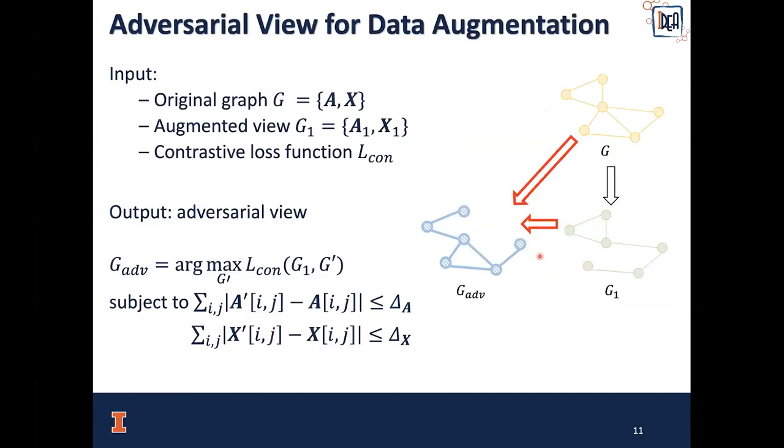I will first talk about how to generate an adversarial view for automatic data augmentation. Our input is the original graph G, augmented view G_1, and the contrastive loss function L_contrastive. We output an adversarial view G_adversary, which maximizes the contrastive loss with respect to G_1, but on the meantime it will be restricted to constraints on the total perturbations from the original graph for both the adjacency matrix and the feature matrix.